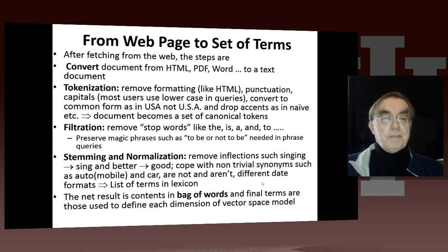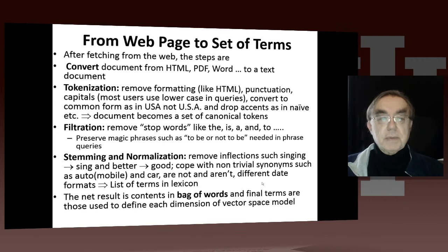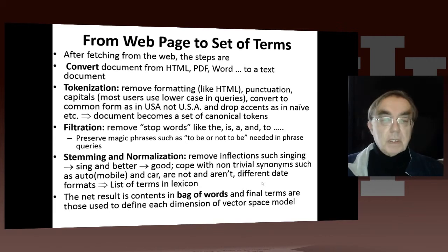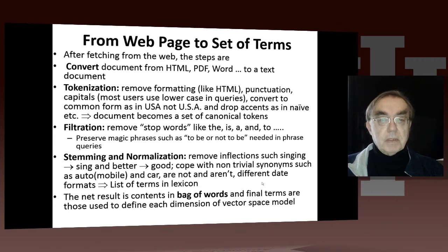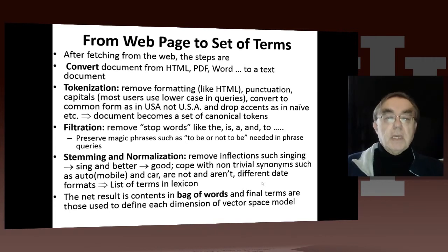Once we've fetched it from the web, what do we do with it? We need to get the canonical words of the English language — the terms. First, you take the HTML document, which could actually be Word or PDF, as well as HTML in various flavors, and convert it to a text document. Then you run it through a PDF-to-text or Word-to-text converter. You then do tokenization — view it as a string of words — and remove formatting, punctuation, and capitals.